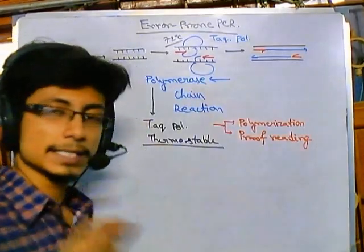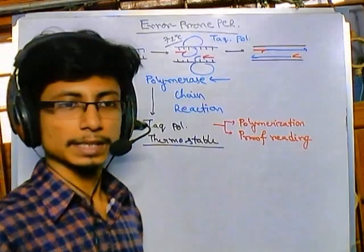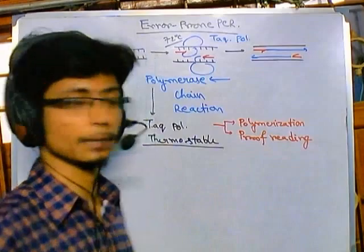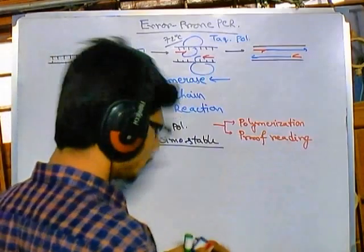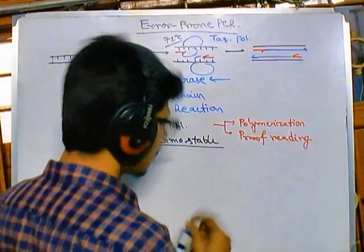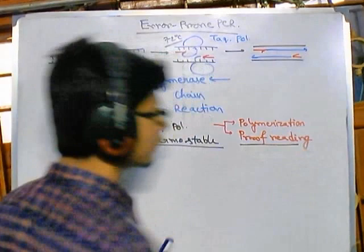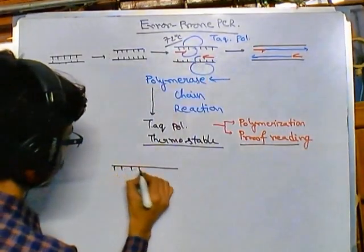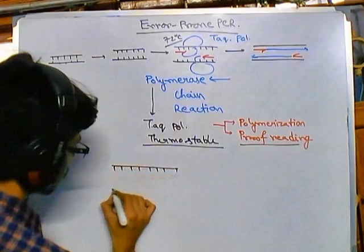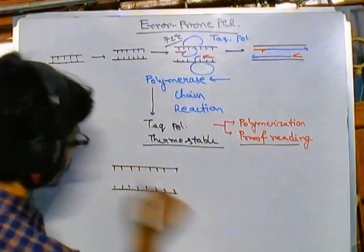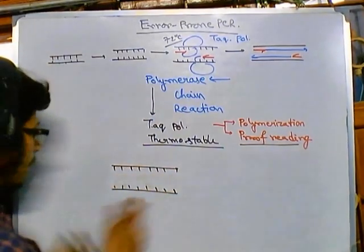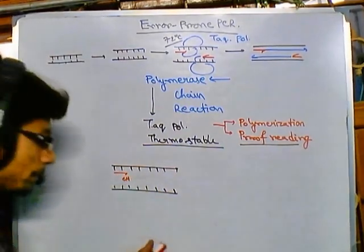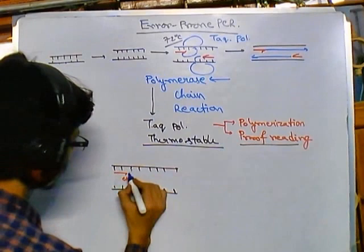There are some polymerase enzymes which have polymerization — the basic activity — but they lack proof reading activity. What do we mean by proof reading? If this is the DNA strand and a primer is provided, the primer provides the hydroxyl group so that the rest of the template can be made. During nucleotide addition, errors can occur.